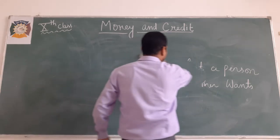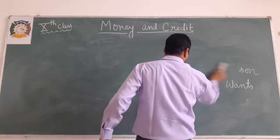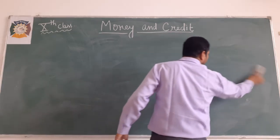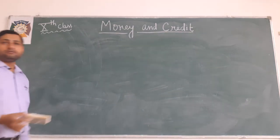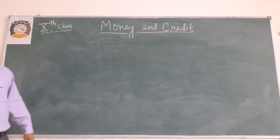Here you can understand the barter system and Double Coincidence of Wants. Now look at these two systems and understand the problem with them.